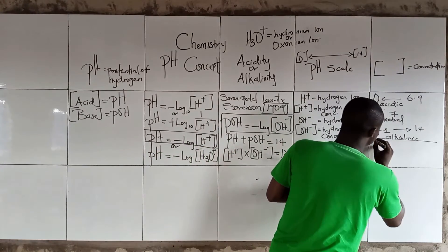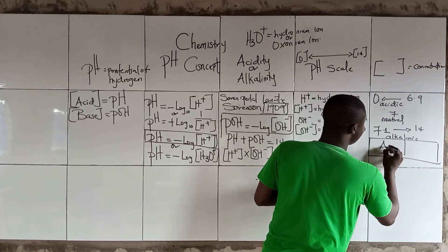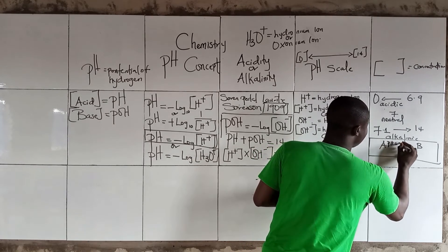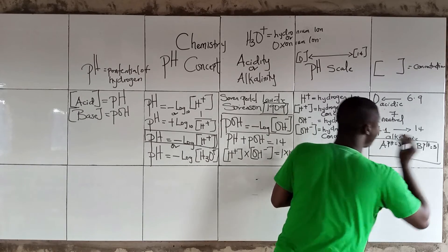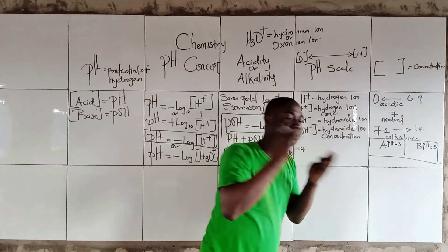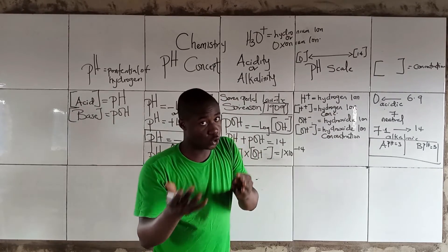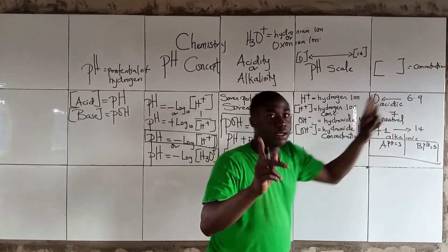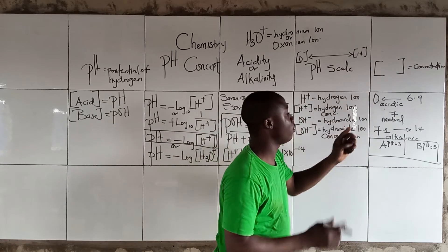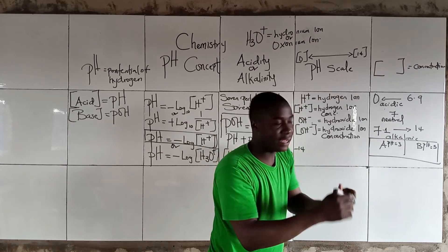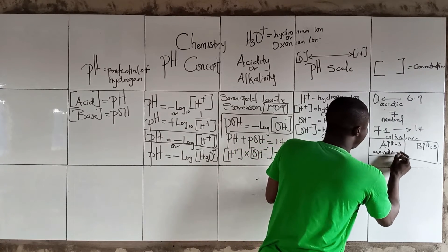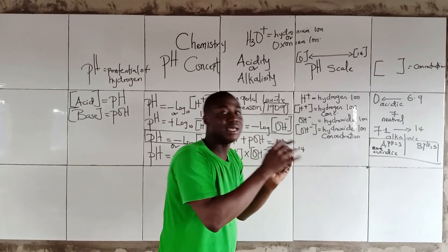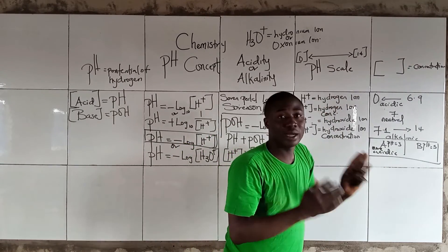Here is a question: Given two solutions — Solution A with a pH of 3 and Solution B with a pH of 5 — which is more acidic? Solution A with pH 3 is more acidic, because a lower pH value indicates greater acidity.